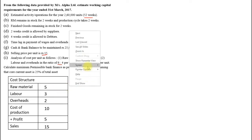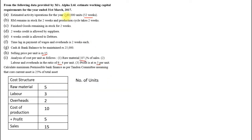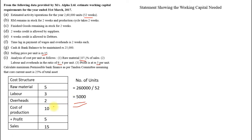For the second working note on number of units: annual production divided by 12 if months, 52 if weeks, or 360 if days. Here it is mentioned 52 weeks, so 2 lakh 60,000 divided by 52 gives 5,000 units per week. These are the two working notes needed before we proceed to the main format.